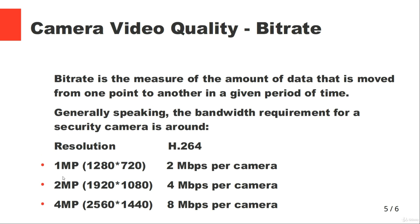Bitrate is a measure of the amount of data moved from one point to another. The bandwidth required for a security camera with H.264 compression is roughly two megabits per second for one megapixel, four megabits per second for two megapixel, and eight megabits per second for four megapixel. All those values are below the lowest capability of Cat5 cable, which starts at 10 megabits per second, though after that you should use Cat5e.